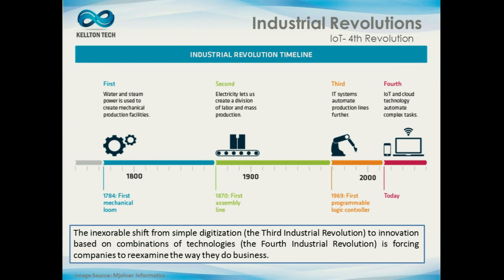Previously it was about simple digitization — the third industrial revolution was about automating things, mostly behind a firewall. Now a combination of these technologies and the innovation that can happen by combining them is forcing companies to re-examine the way they do business, because they're able to talk to their customers in a very individualistic, personalized way — one-on-one.